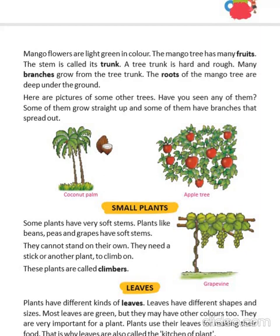Some trees grow straight up, like the coconut palm tree, and some spread out with branches, like the apple tree. Small plants have very soft stems — these cannot stand on their own, so they need a stick or another plant to climb upon. That's why these plants are known as climbers.